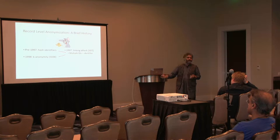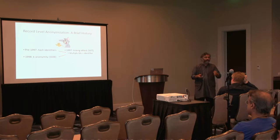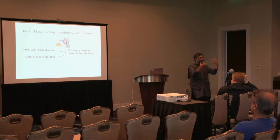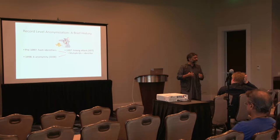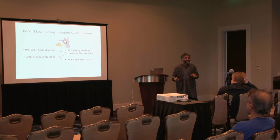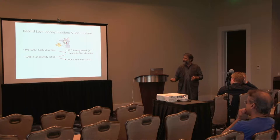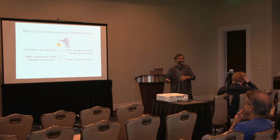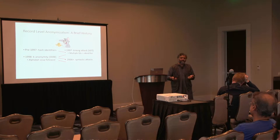Shortly thereafter, Latanya Sweeney and Pierangela Samarati proposed the K-anonymity model — the idea being that you generalize people's demographic attributes so that at least K people share the same demographic attributes, making the same kind of linking attack impossible. This was fine for a few years, until around 2006 people started discovering attacks against K-anonymity, leading to a whole alphabet soup: L-diversity, T-closeness, M-invariance. At some point they may have run out of the Latin alphabet, so there were some Greek names in there as well.